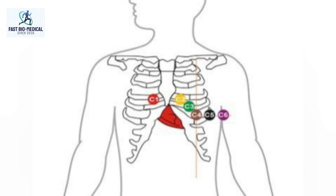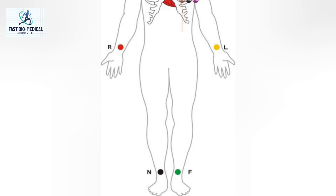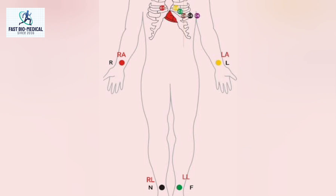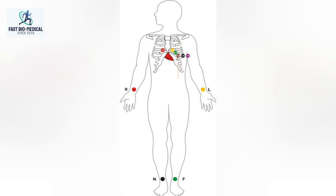Chest lead or chest electrode consists of C1, C2, C3, C4, C5, and C6. Limb leads or limb electrode consists of RA, R, L, N, and F. In some cases we refer C1 to C6 as V1 to V6, and R as RA, L as LA, N as RL, and F as LL. The limb electrode takes acquisition from the patient's limbs.